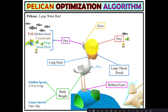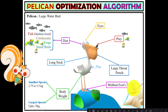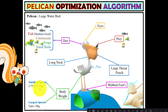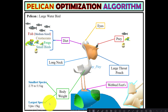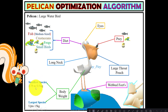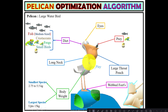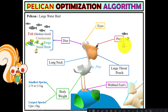Pelicans are large water birds found all over the world in coastal areas, rivers, and lakes, except Antarctica. They are known for their large pouched bills and webbed feet, which they use to swim and dive for prey. The largest species is the Dalmatian pelican, with a wingspan up to 11 feet and body weight over 14 kg. They can eat medium-sized fish, frogs, and even small birds.